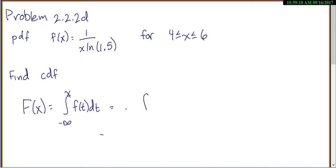So, in our case, this would be something like, instead of integrating from negative infinity, our x is only starting at 4, so we don't have to go from 4 to x. And then wherever we see an x, we put in a t. So 1 over t, natural log of 1.5 dt.